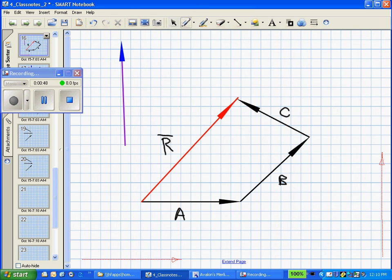And so what we've done is we have added vectorially the vectors A, B, and C, and obtained the resultant vector R.